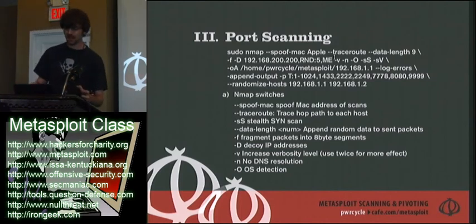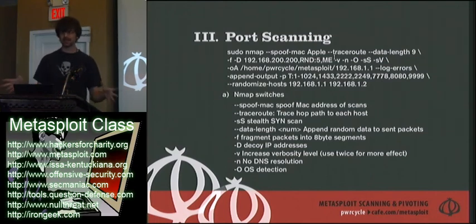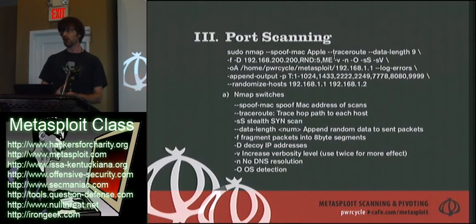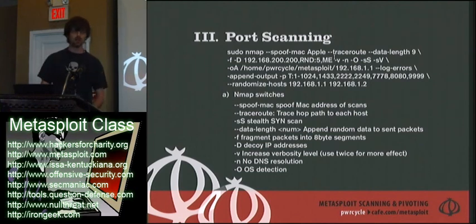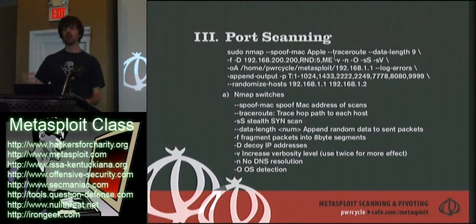Next option is dash-D, for decoys. This is where nmap's ability to spoof IP addresses comes in pretty handy. Even though you're doing a stealth SYN scan of the target, you're still going to try to verify open ports and verify what OS it is, so there's going to be some trace that you scanned the box no matter what. What the decoys allow you to do is throw a bunch of other IPs and requests at the same box so that you become one of six scans, or one of a hundred scans.